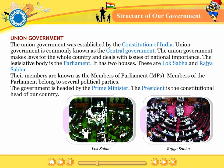Union Government. The union government was established by the constitution of India and is commonly known as the central government. The union government makes laws for the whole country and deals with issues of national importance. The legislative body is the parliament. It has two houses — these are Lok Sabha and Rajya Sabha.